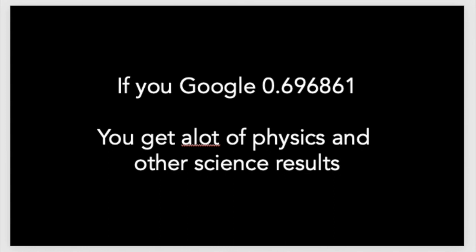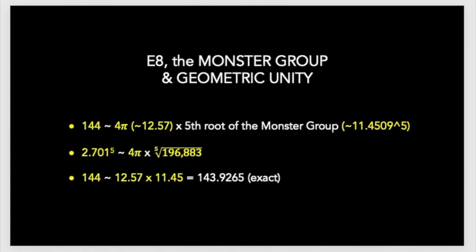If you Google 0.696861, you get a lot of physics and other science results, so I think that this number is applicable, and I think that it should be used and paid attention to because I didn't really find it articulated anywhere else, the Beaubier impact number, 1.00696861. It doesn't exactly equal 144 to multiply 4π times the fifth root of a monster, but it's quite close.